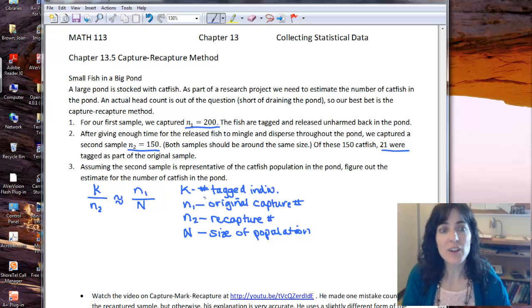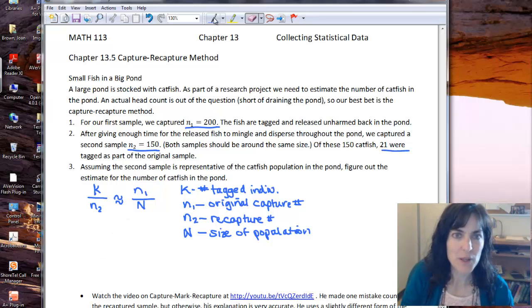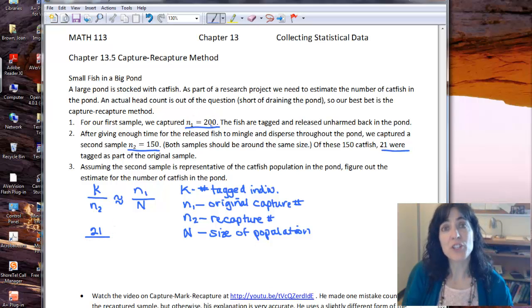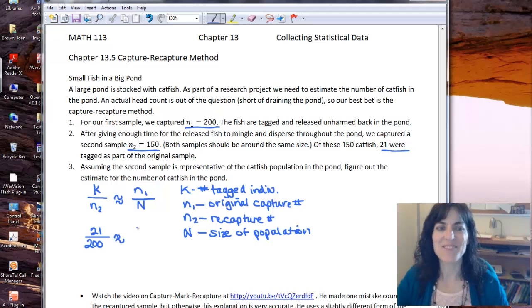Okay, so then we put in all our actual numbers. We know little K, 21 of them were tagged in the recapture group. So we put that 21 in for K, and N sub 1 was our original capture size. So that's 200, and that's approximately equal in our—oops, I did that backwards.